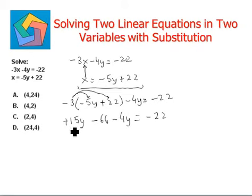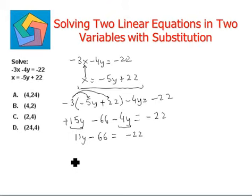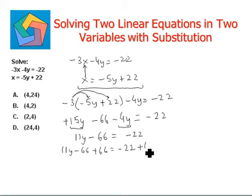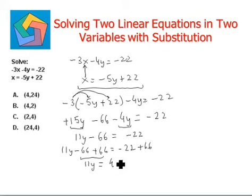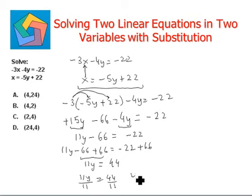So we have 15y minus 4y, which is 11y, minus 66 equals negative 22. Combining the like terms gives us 11y minus 66 equals negative 22. To find out the value of y, we will first add 66 to both sides, making the negative 66 equal to 0. So 11y equals negative 22 plus 66, which is positive 44. To find out the value of y, we divide by 11 on both sides.